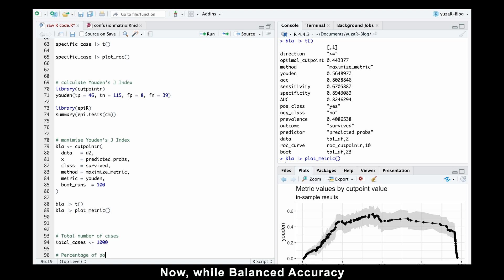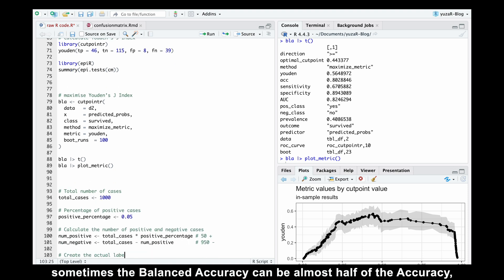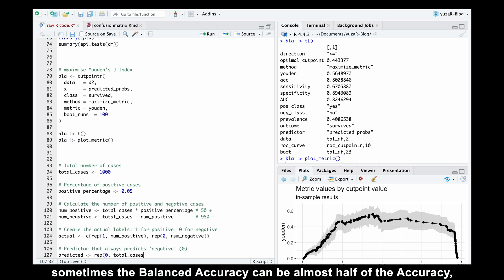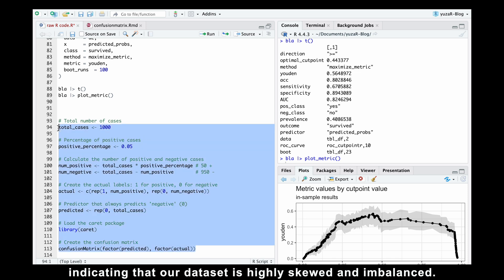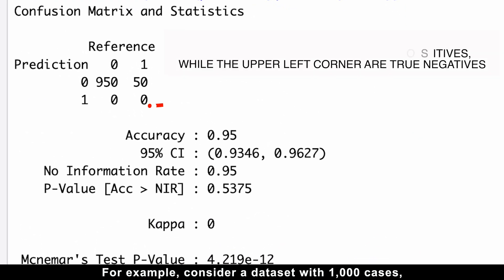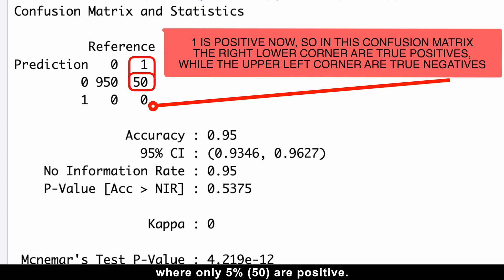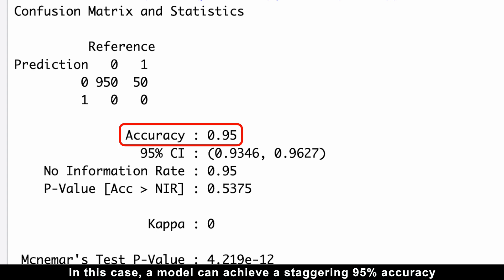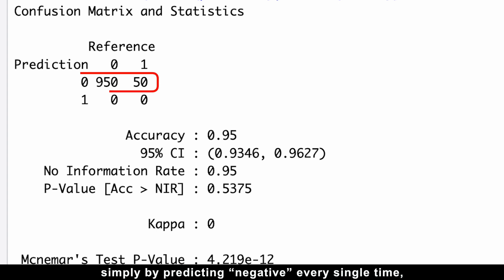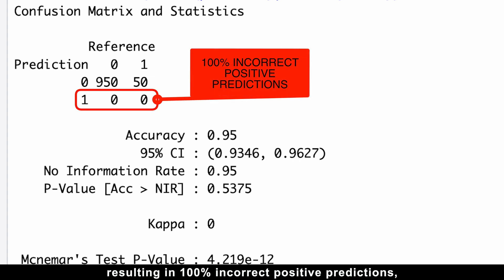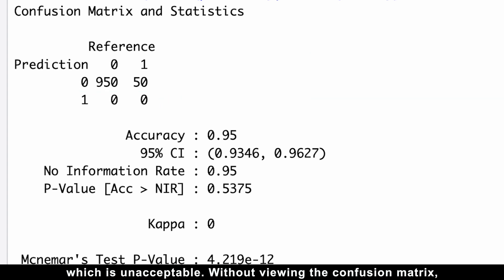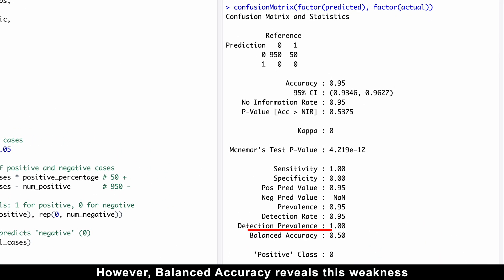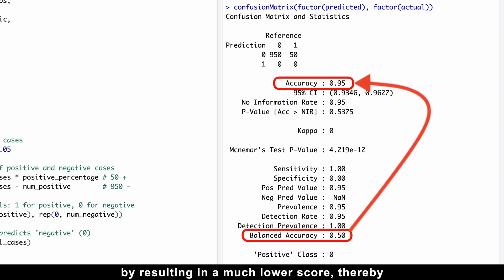Now, while balanced accuracy is handy for slightly imbalanced datasets, sometimes the balanced accuracy can be almost half of the accuracy, indicating that our dataset is highly skewed and imbalanced. For example, consider a dataset with 1,000 cases, where only 5% are positive. In this case, a model can achieve a staggering 95% accuracy simply by predicting negative every single time. Yet, it fails to detect any positives, resulting in 100% incorrect positive predictions, which is unacceptable. Without viewing the confusion matrix, we remain unaware of this mess. However, balanced accuracy reveals this weakness by resulting in a much lower score, thereby indicating that something is seriously off.